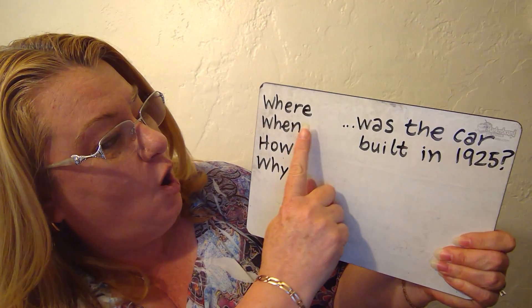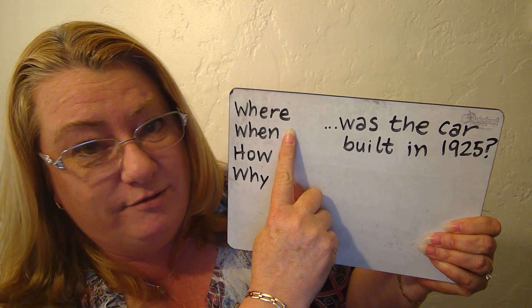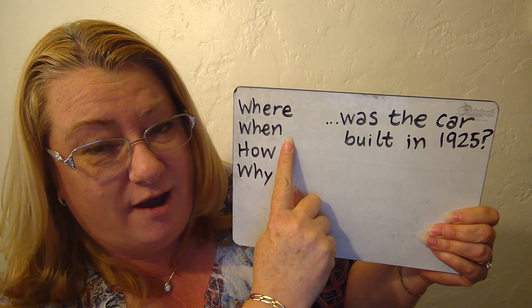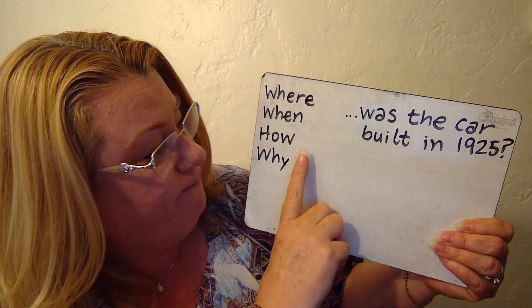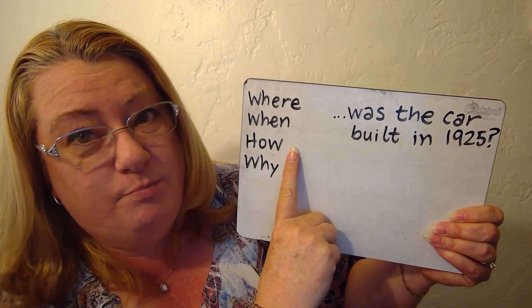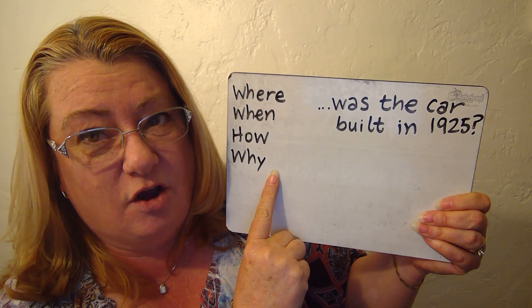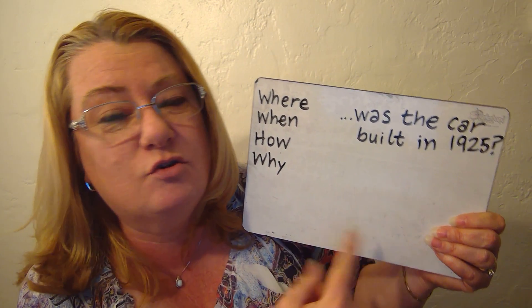Here are more examples of how to form interrogatives: 'Where was the car built in 1925?' 'When was the car built in 1925?' — spring, summer, fall. 'How was the car built in 1925?' And 'Why was the car built in 1925?' All of these are passive forms of the interrogative.